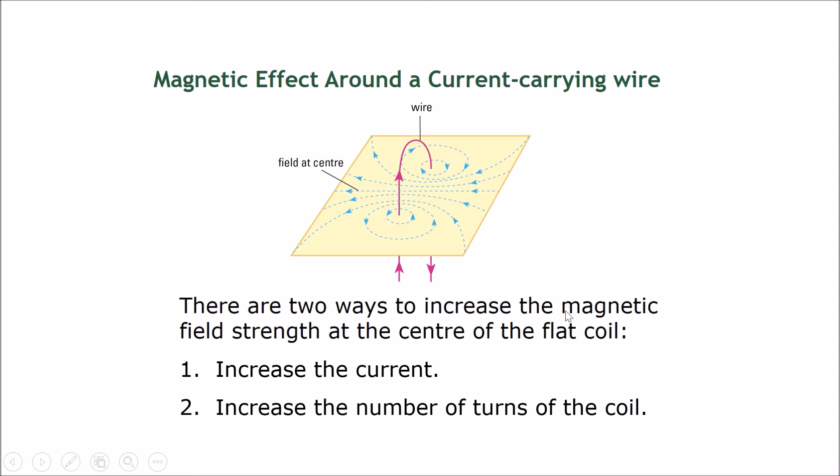Now, there are two ways to increase the magnetic field strength at the center of the flat coil. The first one is the one that we showed just now, which is just to increase the current. If we increase the current, then these magnetic field lines will become more compressed, and therefore, the magnetic field will be stronger. However, an easier way without increasing the current too high is just to increase the number of turns of the coil.